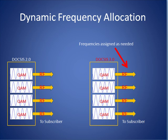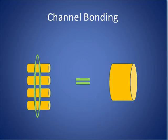In a dynamic frequency allocation scheme, frequencies are assigned as needed from the radio front end and are not fixed for each subscriber. Likewise, channel bonding — the addition of multiple frequencies together to form a large pipe — is used to provide large amounts of bandwidth for brief periods.